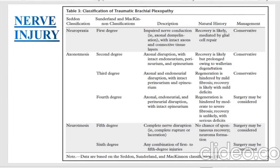First, we will start with neurapraxia. It includes Sunderland classification first degree injury. It includes impaired nerve conduction with intact axon and connective tissue layer. Recovery is typically expected.